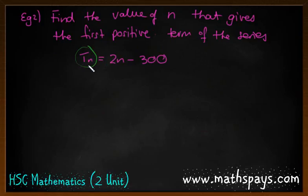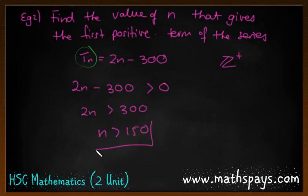We want this to be a positive number. If I subbed in 1, we get a negative number. We want this whole thing to be greater than 0, a positive integer. If I solve this, I plus 300, we get n is greater than 150. I've mentioned that n has to be a positive integer. It can't be 0 because that's not a positive integer. So we want n equals 151 because that will give the first positive number. If I put 150 in there, I get 0.